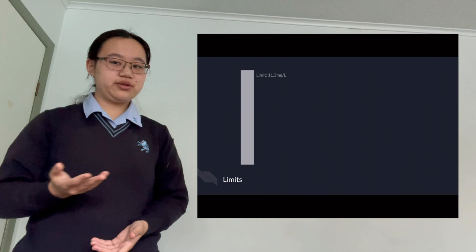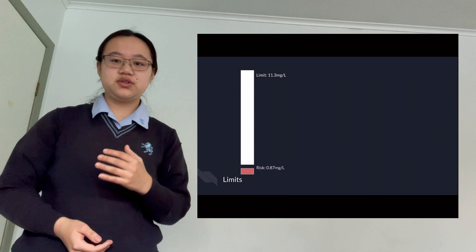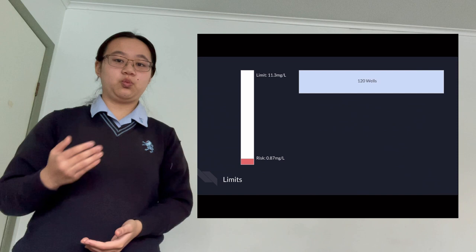New Zealand states that the safety limit of nitrates in drinking water is 11.3 mg per liter. However, there is evidence suggesting that there is an increased risk of health issues when the levels are above just 0.87 mg per liter.